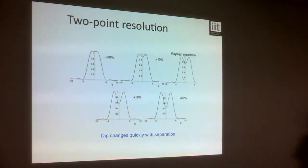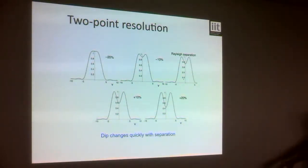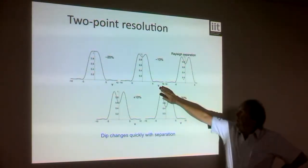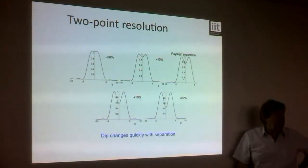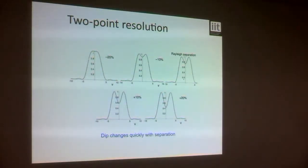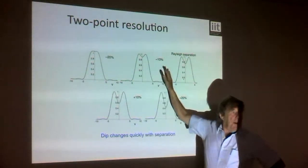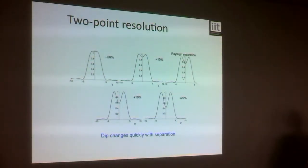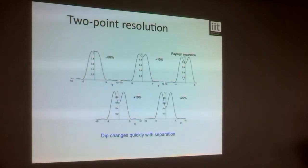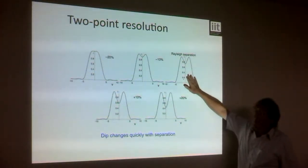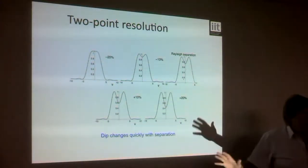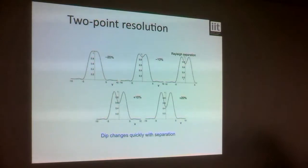This shows what happens as you change the separation between the two points. At Rayleigh's condition the points are just resolved; 10% closer or 20% closer and resolution disappears; 10% or 20% further apart and it's clearly resolved. The size of the dip changes very quickly over quite a small range of distances — it's a sort of catastrophic effect when resolution suddenly disappears. So whether you define the criterion here or slightly differently doesn't really matter much in terms of performance.